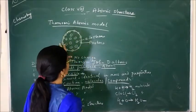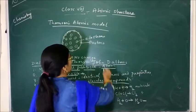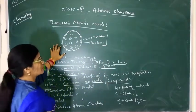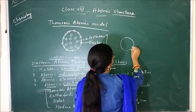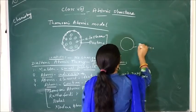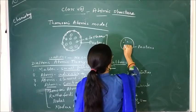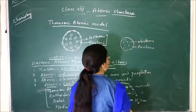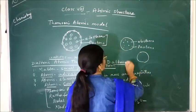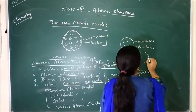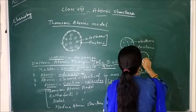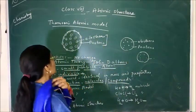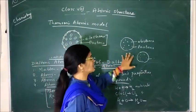Thomson compared his model with a watermelon — the fleshy part he described as protons, and the black seeds scattered inside he described as electrons. He also described his model with the plum pudding model — the edible part represents protons, and the dry foods embedded inside the pudding represent electrons. So he compared his model with both the watermelon and the pudding.